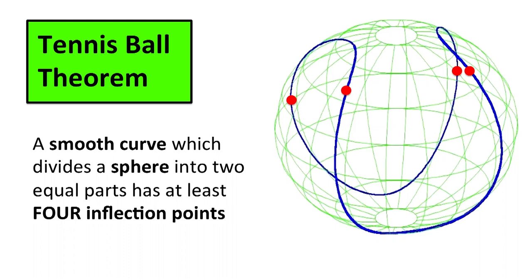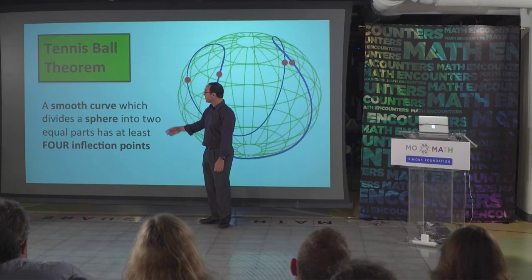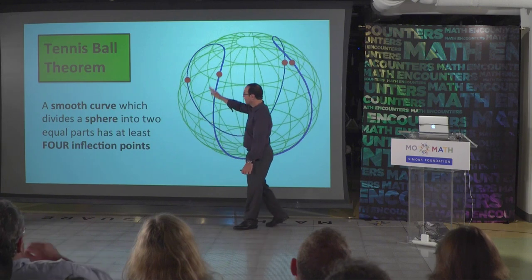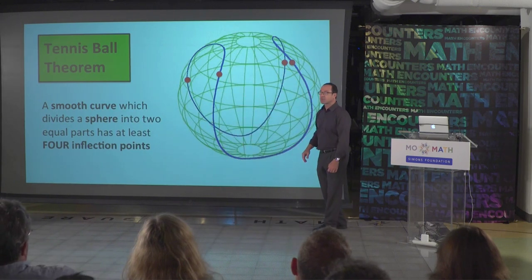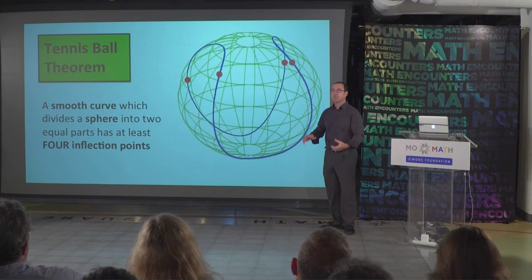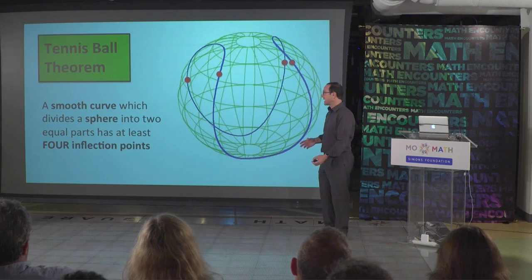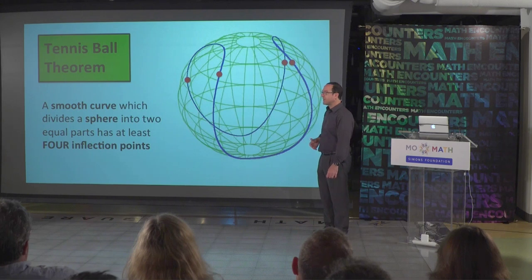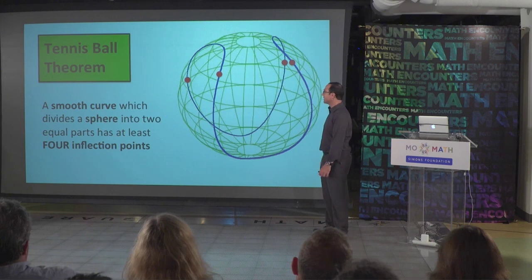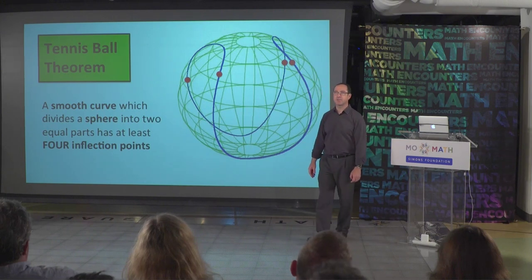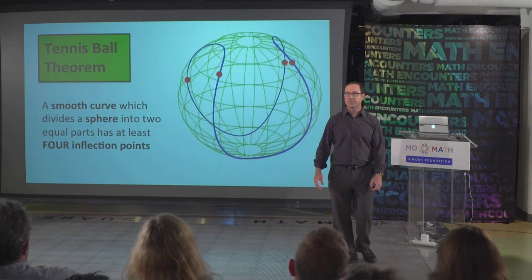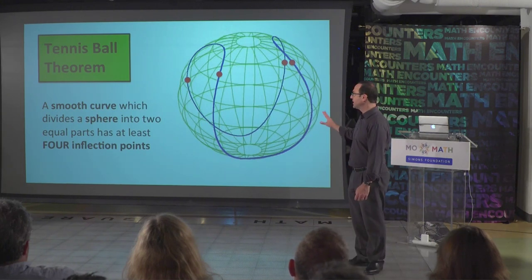If we look on this curve, you will find that there are four inflection points. This is part of a much bigger result called the tennis ball theorem. The tennis ball theorem says: suppose you have a smooth curve on a sphere, and this curve cuts the sphere into two pieces of equal area. Then you have to have at least four of these switching points, these inflection points. And this always has to happen.